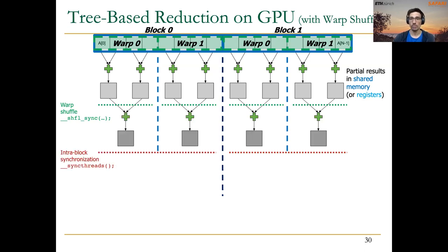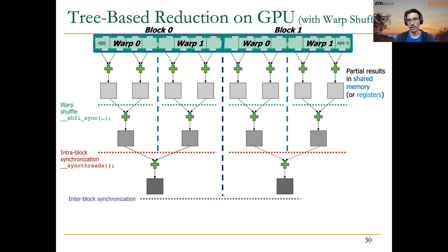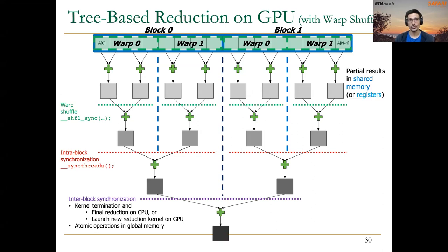Using shuffle instructions, we can efficiently execute the final reduction iterations where all active threads belong to the same warp. The rule of thumb is: if threads are in the same warp, use warp shuffle instructions to share data without shared memory. If threads need to exchange data across different warps within the same thread block, use shared memory with __syncthreads(). If communication is needed across different thread blocks, use inter-block synchronization via kernel termination or atomic operations.